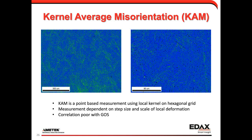We can also look at deformation on a point-to-point basis using Kernel Average Misorientation, or KAM, measuring misorientation of every point with all six neighbors — we use a hexagonal grid for six equidistant neighbors. The result is much bluer and more homogeneous than the GOS map, indicating the deformation is occurring on a larger scale than the step size here. Our precision for measuring deformation with this step size means we're not resolving things at the 600 or 200-nanometer limit, but as we look at larger grains we start to see more of the deformation present within those lath grains.